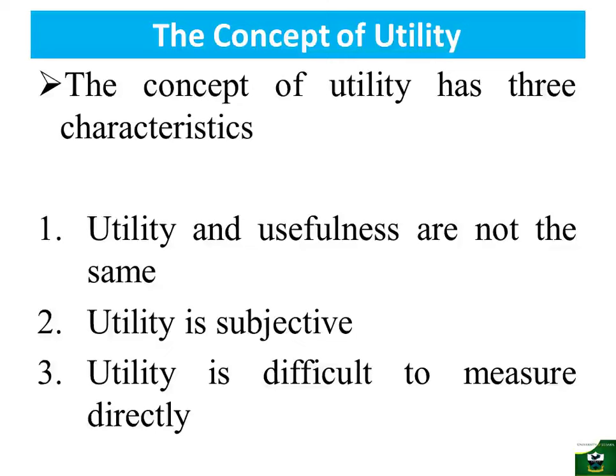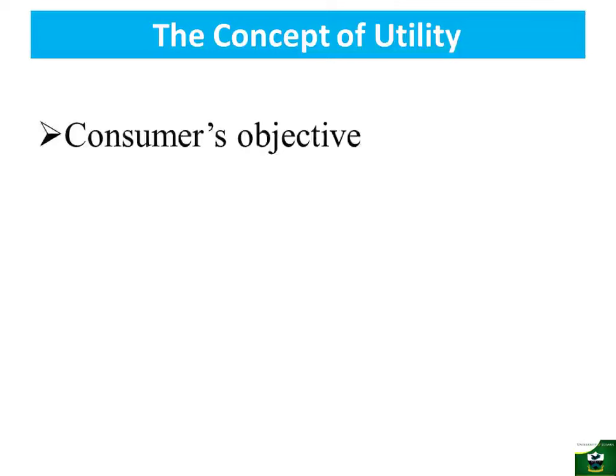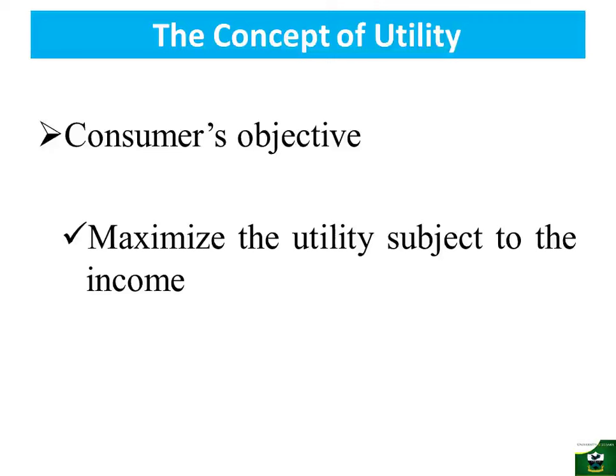Every consumer has one key objective: to maximize utility subject to their income. When the consumer has income, their aim is to spend that money in a way that maximizes utility in terms of what they purchase and the usefulness they derive from it. Therefore, the consumer's main objective is to maximize utility subject to their money income.